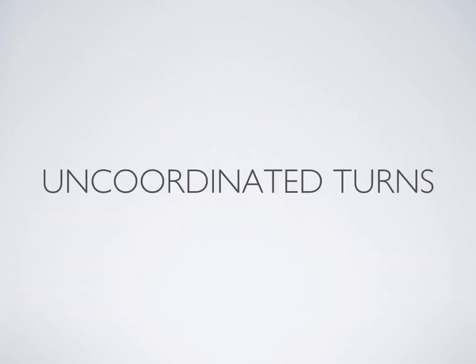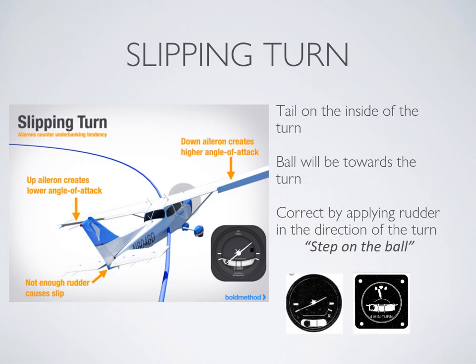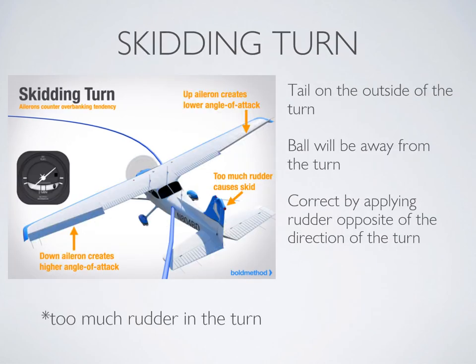The question is, how much rudder do you want to use? A slipping turn is when you're not using enough rudder in the turn, or too much opposite rudder — basically, the nose of the aircraft is slipping towards the outside of the turn. A skidding turn is the opposite: it's when you use too much rudder in the turn, and the nose is skidding towards the inside of the turn.